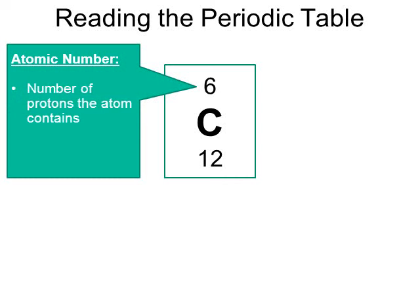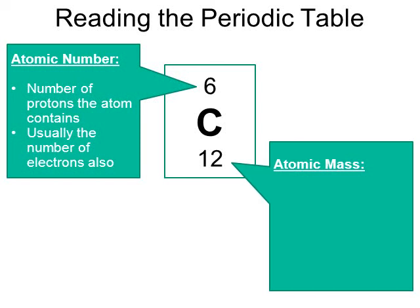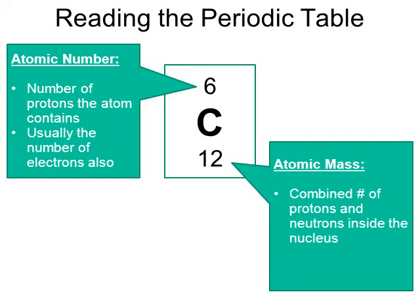So right now I know that carbon has 6 protons. Think about what we said a moment ago — usually the number of protons is the same as the number of electrons. So I also now know that carbon has 6 electrons. The bigger number is what is called the atomic mass or the atomic weight. By definition, the atomic mass is the combined number of protons and neutrons that are packed inside the nucleus.